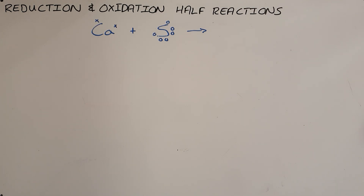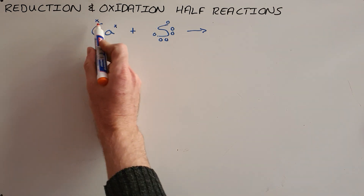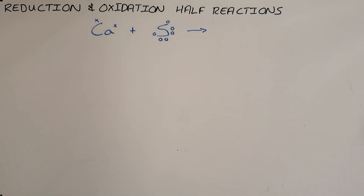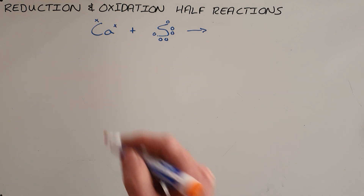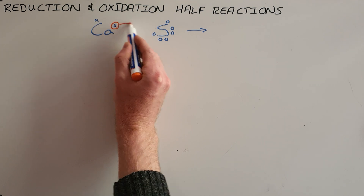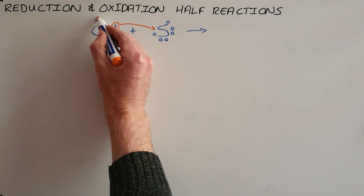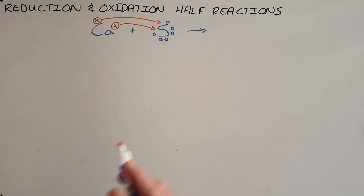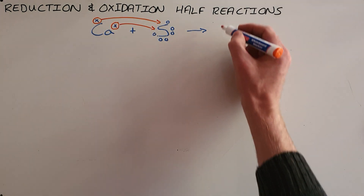If we consider the bond that forms between calcium and sulfur, we remember from grade 9, 10 and 11 that calcium has two valence electrons, sulfur has six valence electrons, and bonds form in an attempt to reach a full valence shell. An ionic bond would form between calcium and sulfur, which essentially involves a transfer of electrons from calcium to the sulfur.